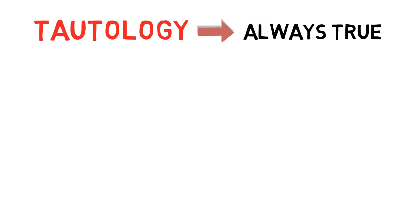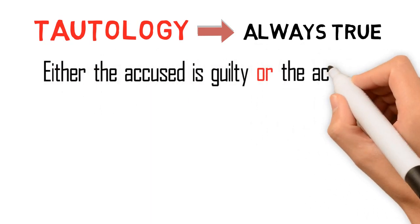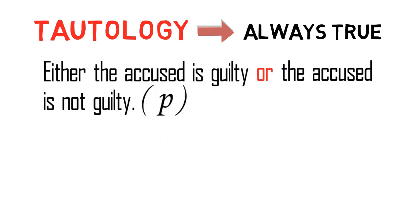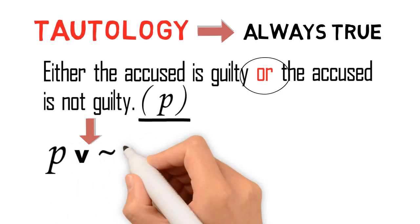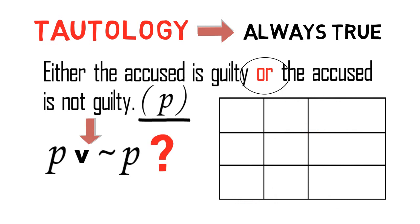Let's consider this example: Either the accused is guilty or the accused is not guilty — P. Obviously, this proposition is a disjunction, yet both disjuncts can be represented by the variable P. Hence, the proposition is symbolized as P or not P. Now, in what sense is this proposition always true?